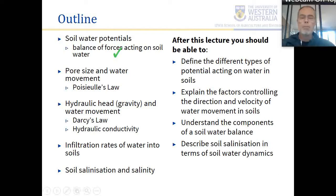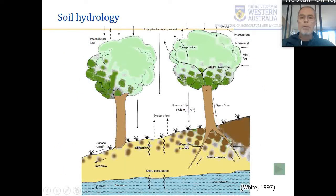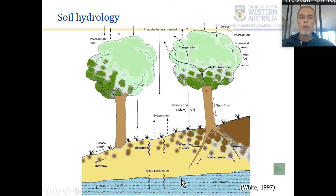There are some learning outcomes you should take note of for this lecture — they're on LMS as well. Getting back to our soil hydrology diagram from last time: if we take the soil as the component of an ecosystem we're interested in, there are inputs and outputs of water, and there is a balance. We can account for what's going in and coming out if we make the right measurements.